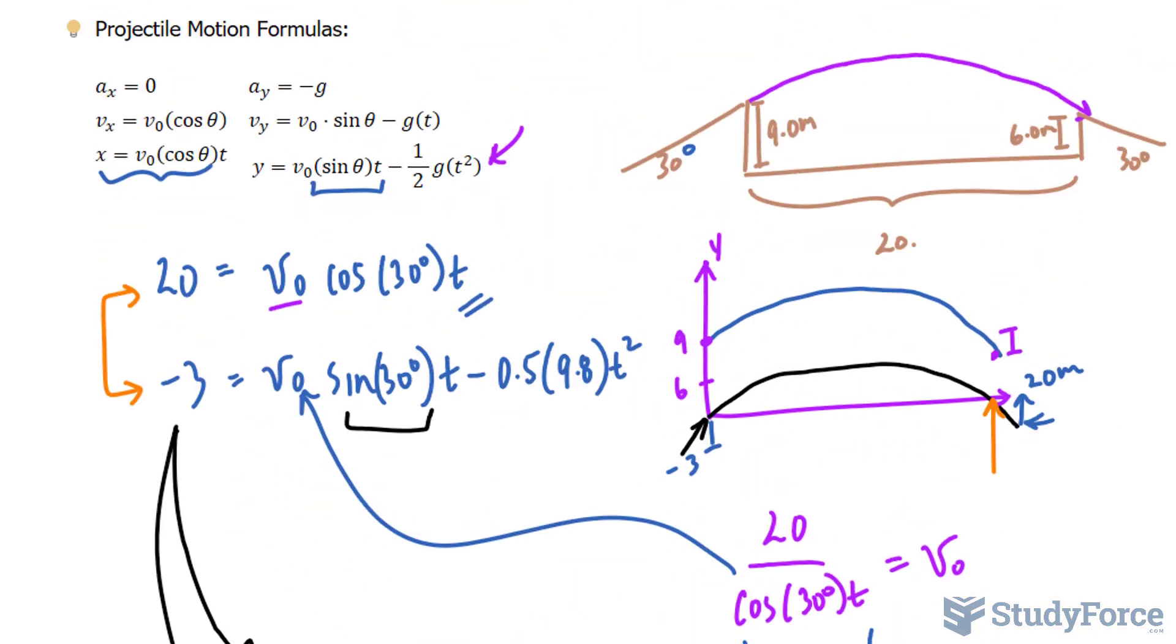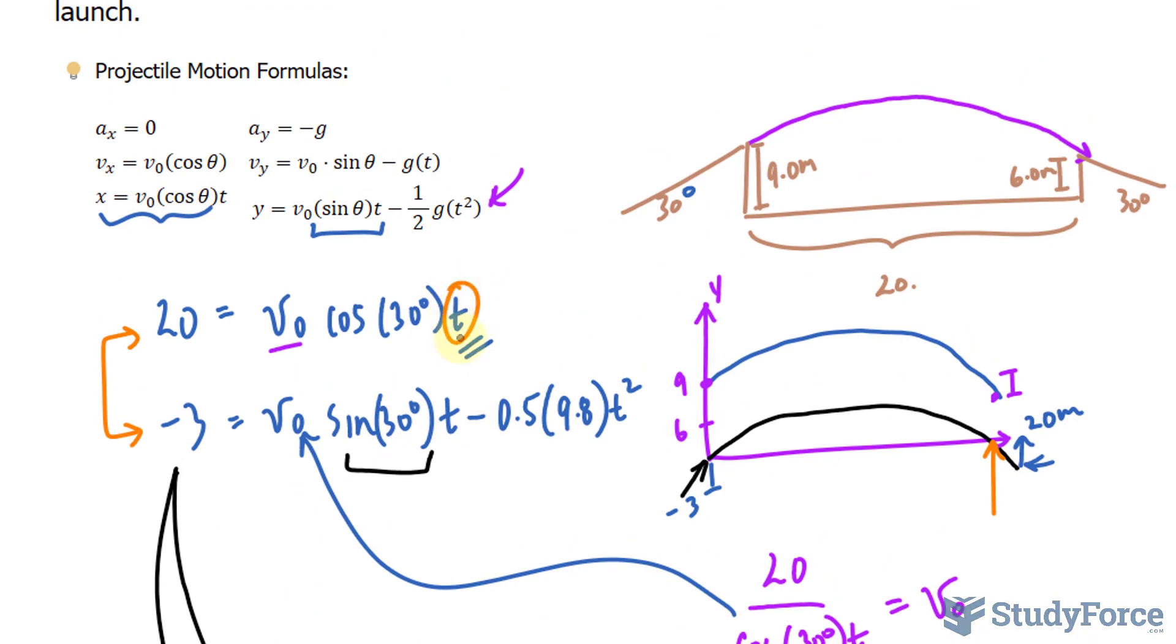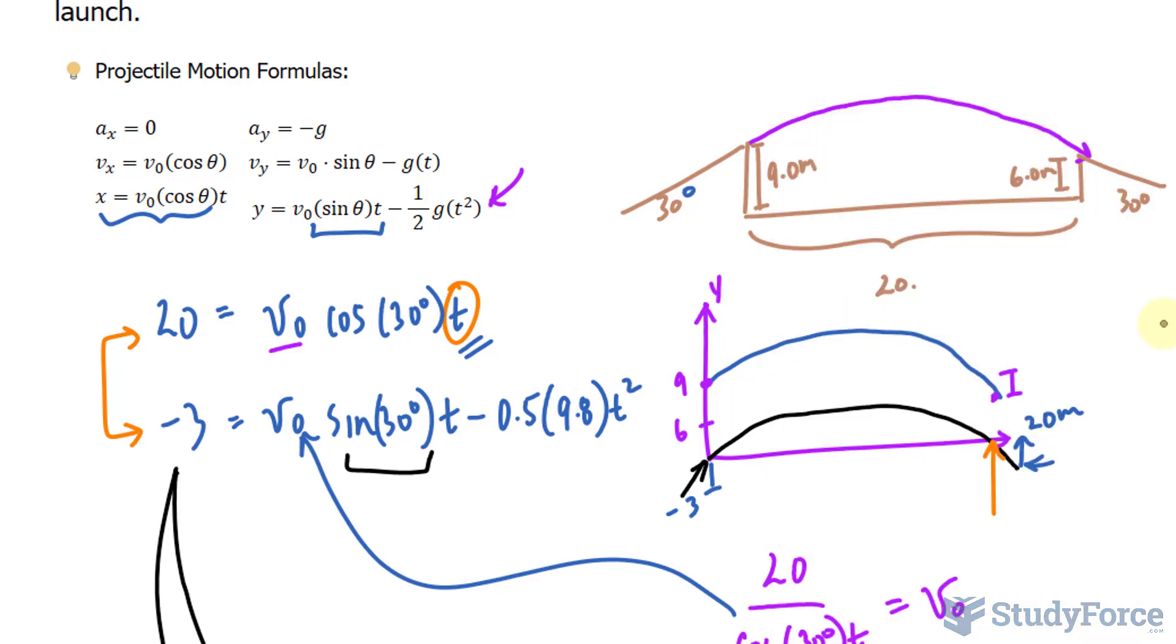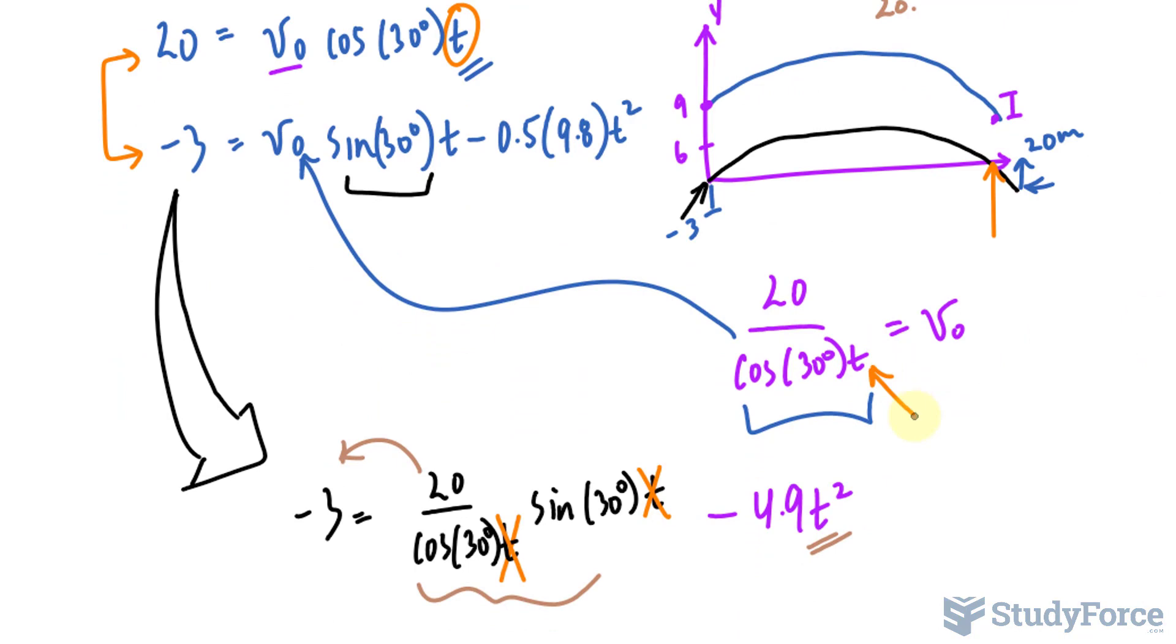Now that I've found the time, I can actually substitute it right into here like I said I would to find the initial velocity. Of course, you do need to do a little bit of rearranging. And you know what? Why not just throw it into there since we've already rearranged for v initial?